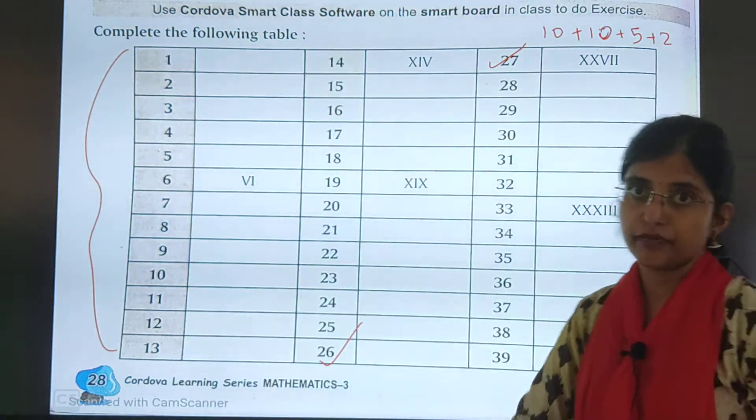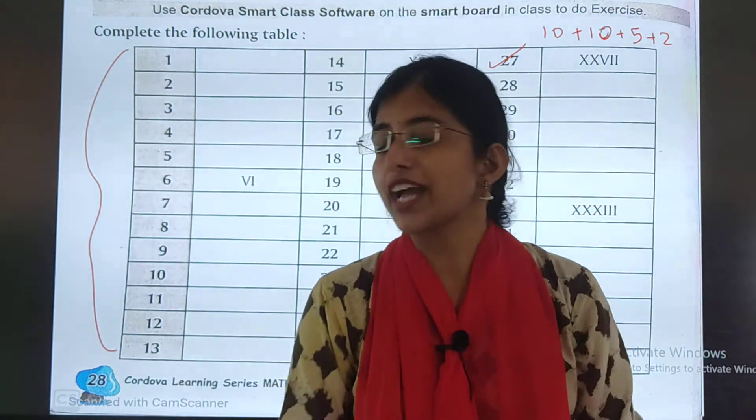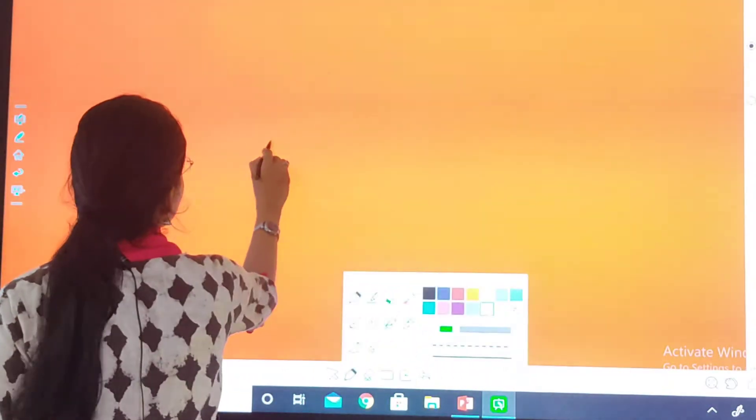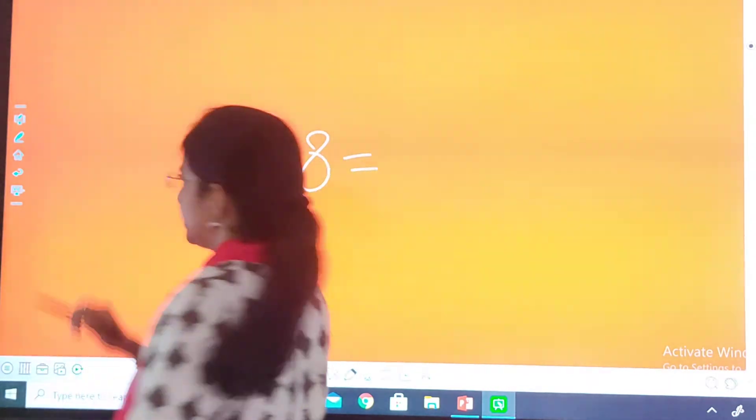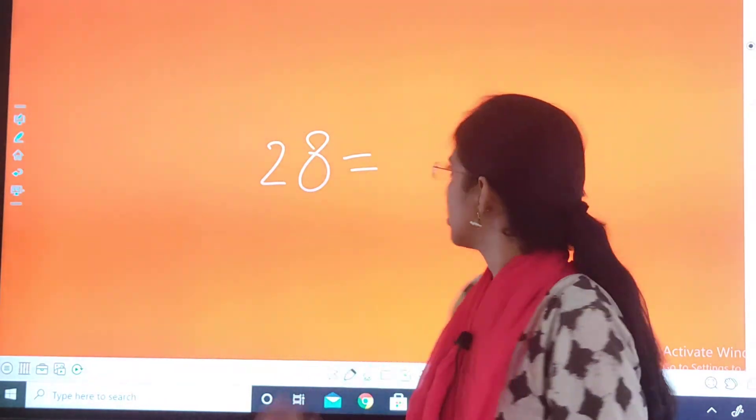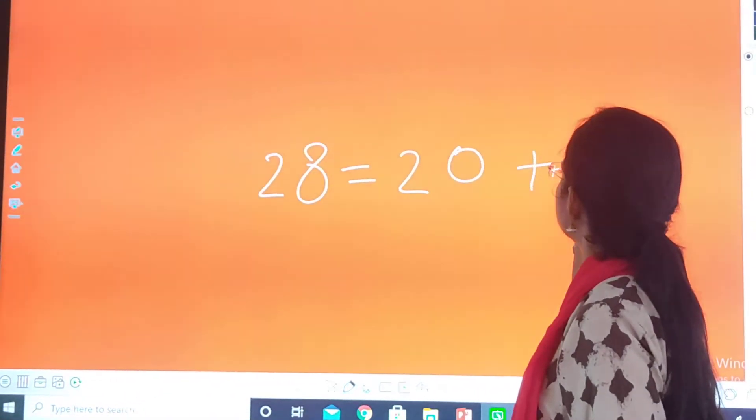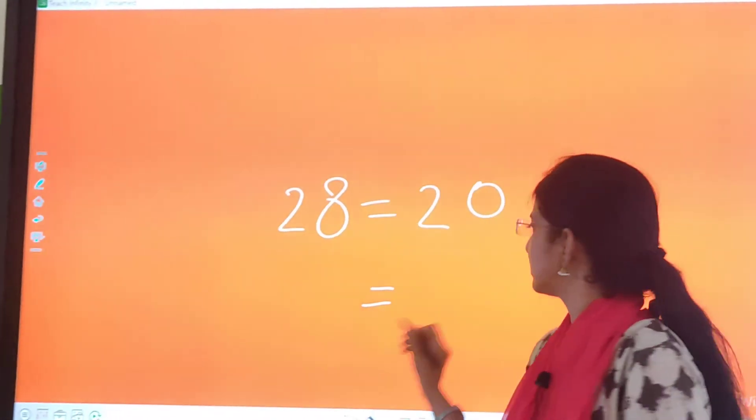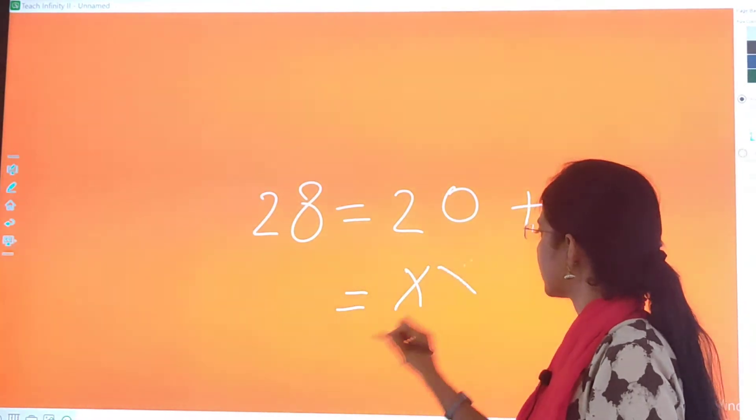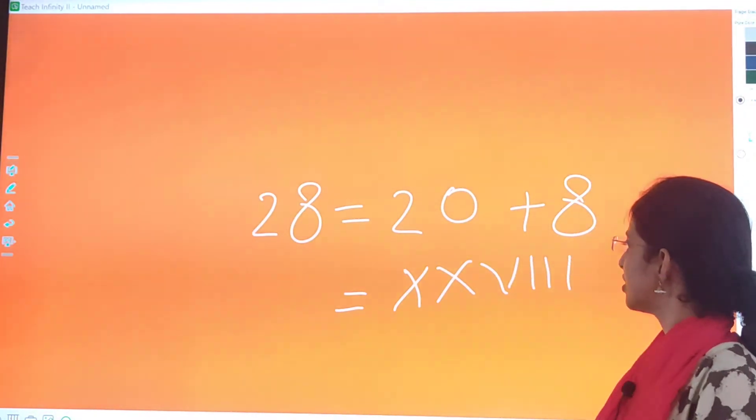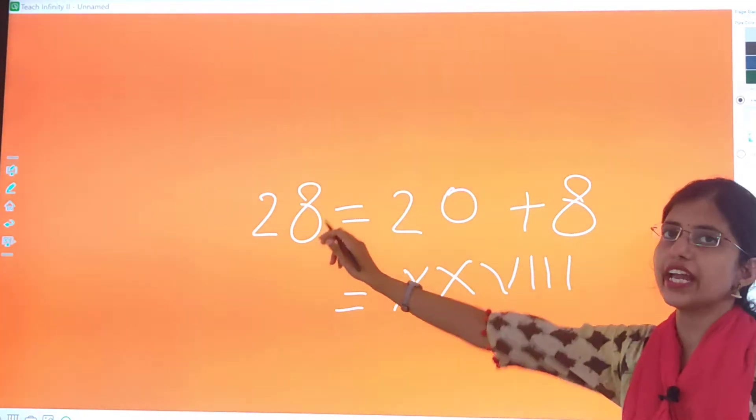Now we will be solving 28. Children, take out your notebook and be ready with your pencil. Now we will be writing 28. See, what is 28? 28 can be broken into 20 plus 8. And 20 can be written as double X. So X, X. And how is 8 written? Like this. 8 is written like this. So this is how 28 is represented.